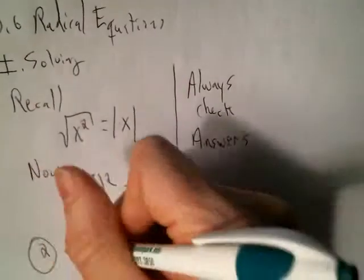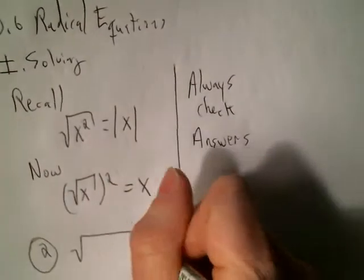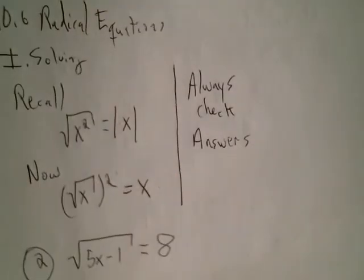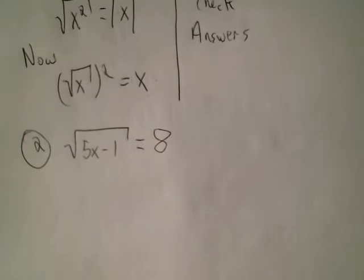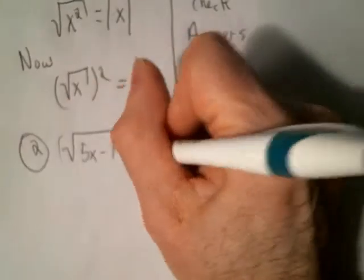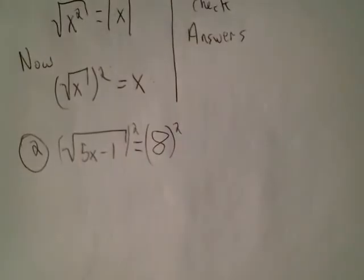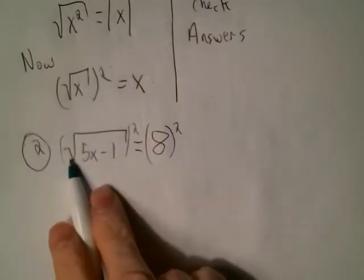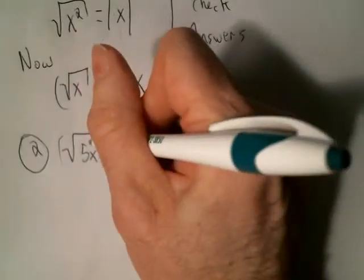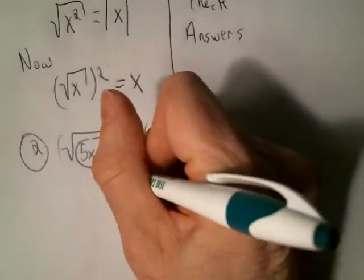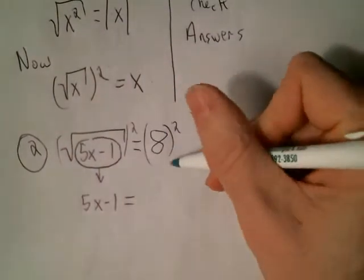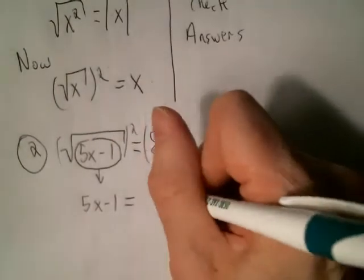Let's jump in and look at number 2. We have the square root of 5x minus 1 equals 8. What do you do? You want to square both sides — over here and over here. On the left side, the square root and the square cancel each other out, leaving just 5x minus 1. On the right-hand side, you'll have 8 squared, which is 64.